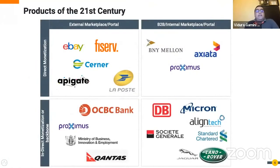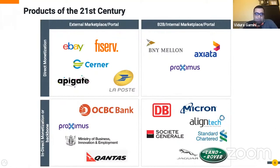APIs are also treated as an encapsulation of an asset, and because of that they are increasingly intermediated, traded, and marketed — not only between organizations, but also within an organization. There can be several business units or strategic business units with their own APIs, each owning certain data or capabilities core to the business, which they share amongst themselves.